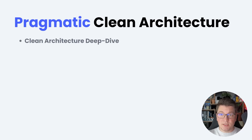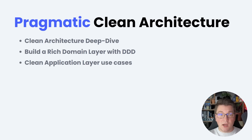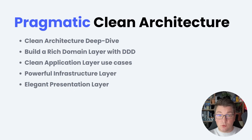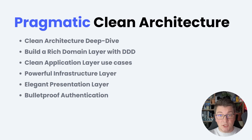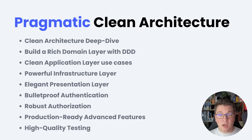Pragmatic Clean Architecture is a comprehensive course that covers the clean architecture fundamentals. It teaches you how to build a rich domain layer with domain-driven design, how to design a clean application layer, and the infrastructure layer to encapsulate external dependencies. It shows you how to build a presentation layer using controllers and minimal APIs, how to integrate authentication with KeyCloak, and how to extend this to support role-based and permission-based authorization. It also covers advanced features like structured logging, monitoring, API versioning, and a high-quality test suite containing unit tests, integration tests, functional tests, and architecture tests.